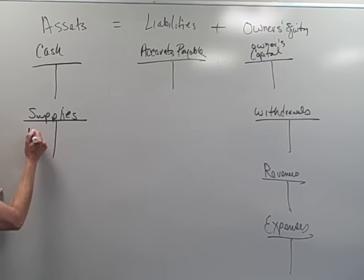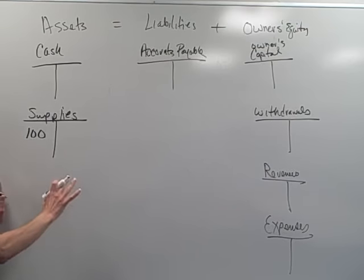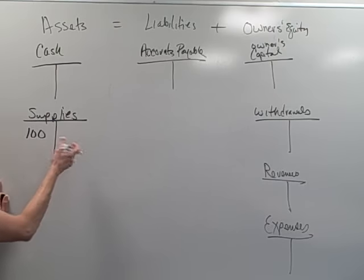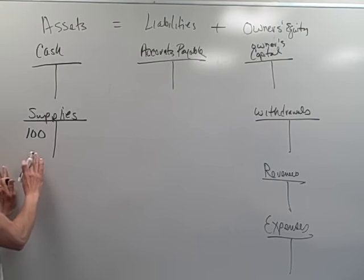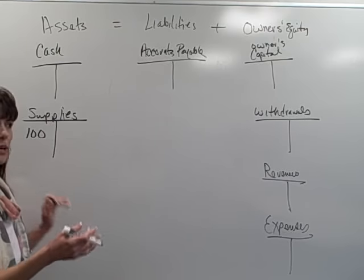Let's say that our supplies went up a hundred dollars. And we're looking at this account and we're saying, oh, wow, well, supplies went up a hundred dollars. Well, I can see that I debit supplies for a hundred, but what did I credit? I can't see what I credited.